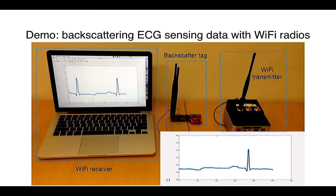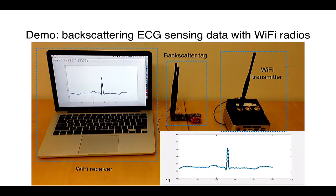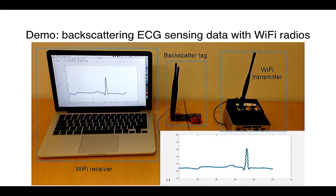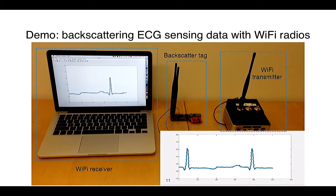Here is a demo of our system. We have a Wi-Fi transmitter transmitting continuous Wi-Fi packets, a Wi-Fi receiver which is my laptop, and a special device in the middle. This special device — we call it a backscatter tag — is connected to an ECG sensor. It reflects Wi-Fi packets from the transmitter to the receiver, injecting ECG sensor data onto the reflected signal. The receiver decodes the reflected packets, extracts the ECG sensor data, and displays it in real time.